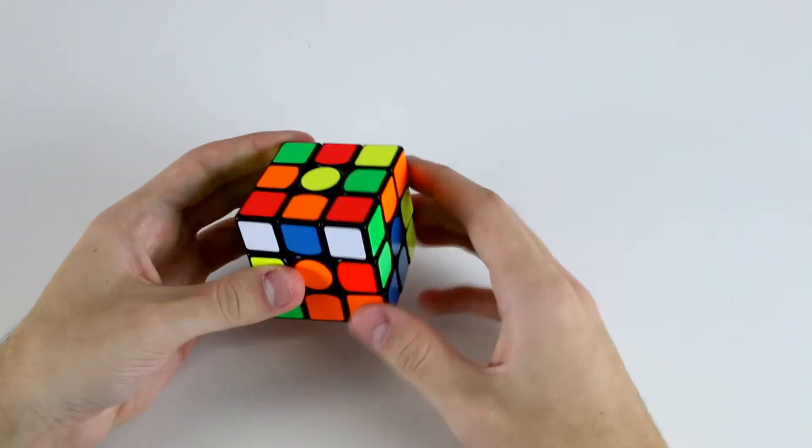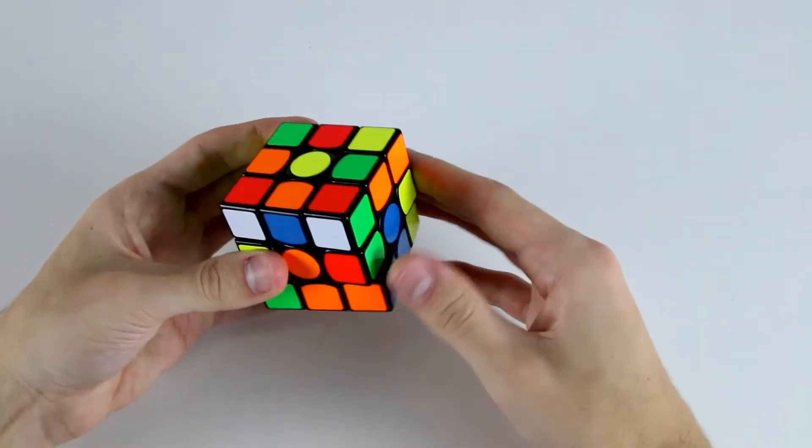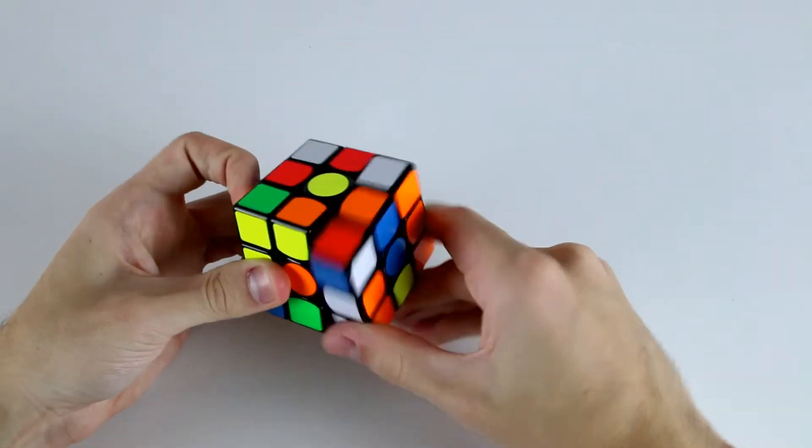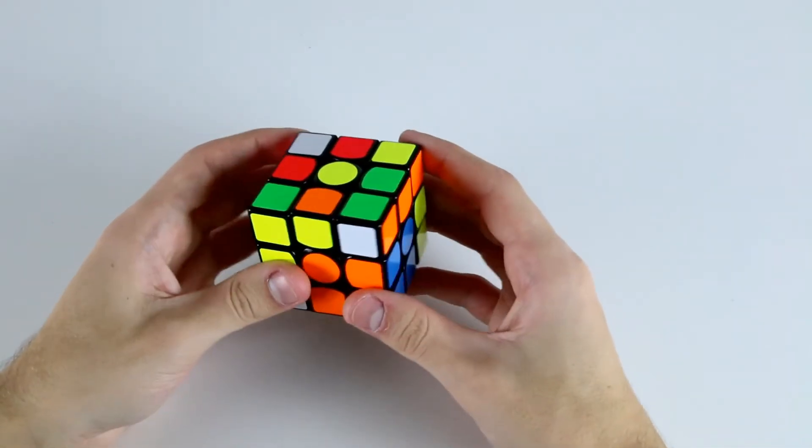So in this example I've got this F2L edge that I want to insert here, and because it's oriented I can simply do a D R U' R' D' to insert it into its correct position without rotating the cube at all.